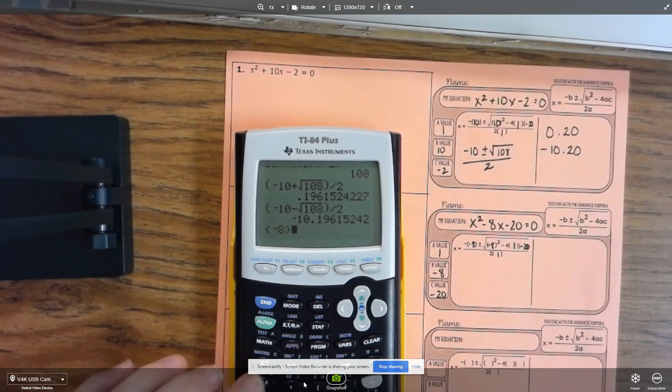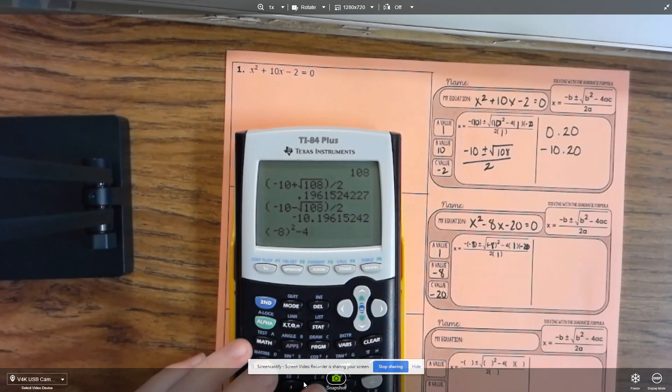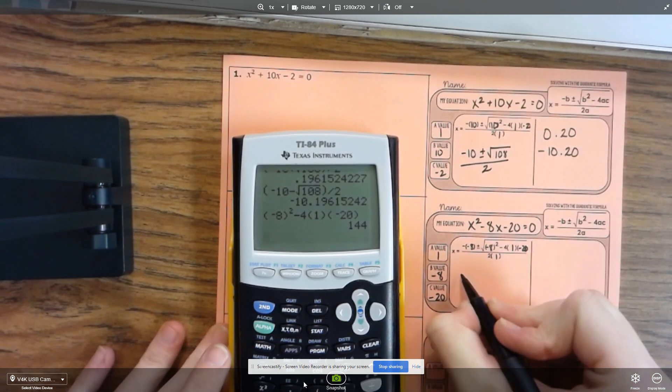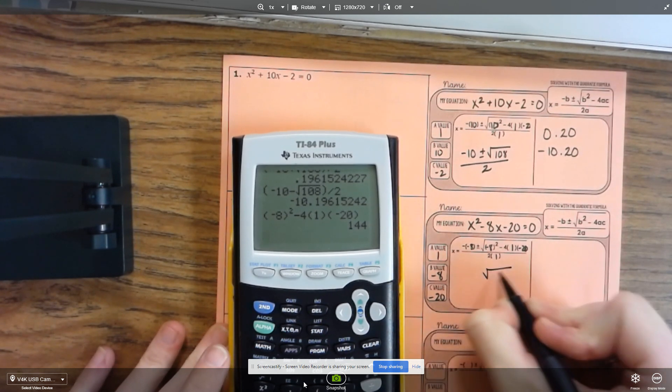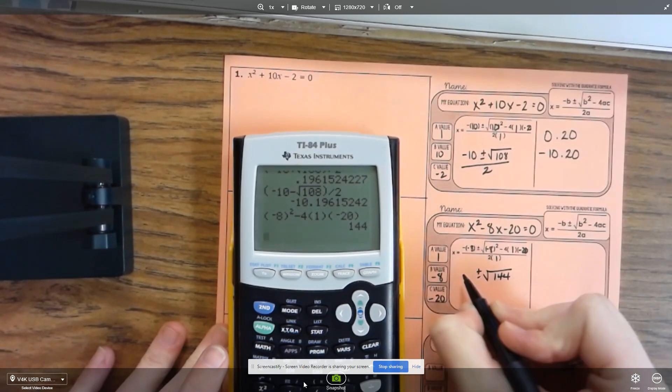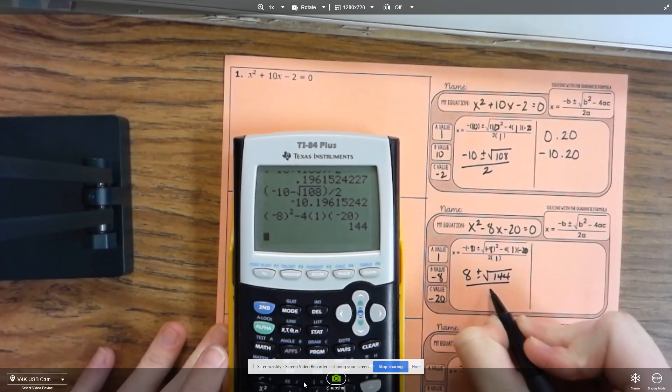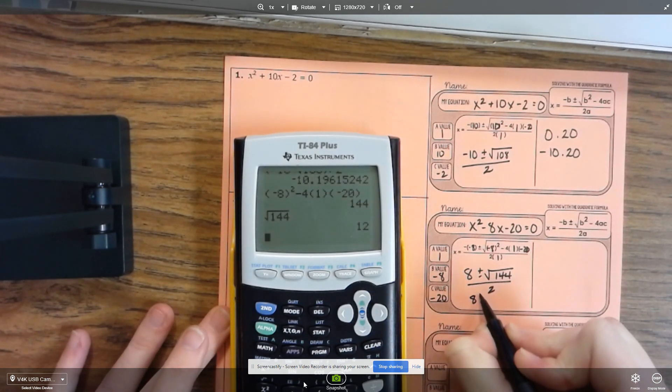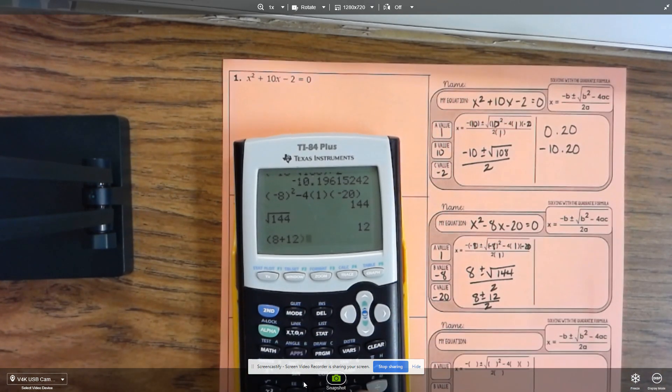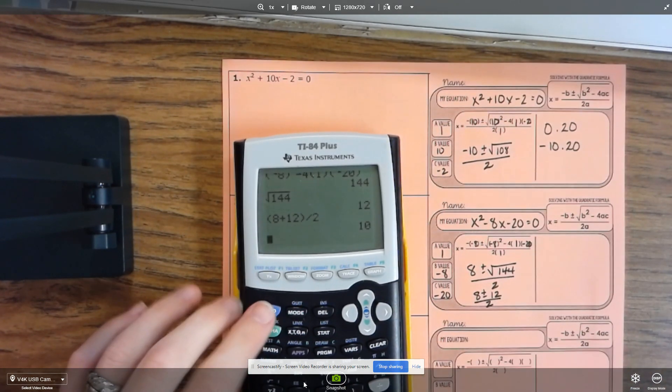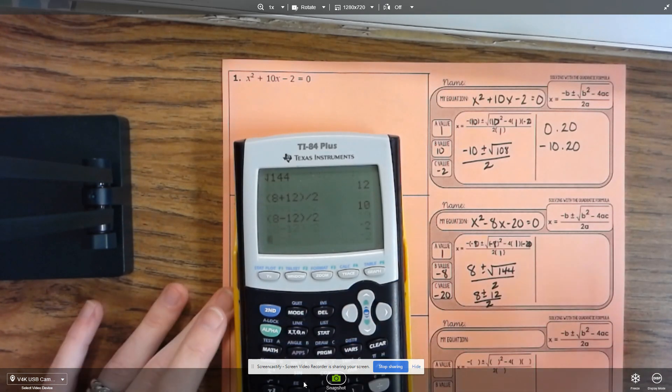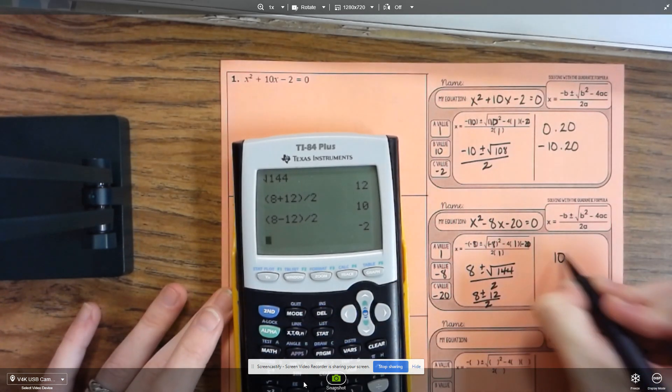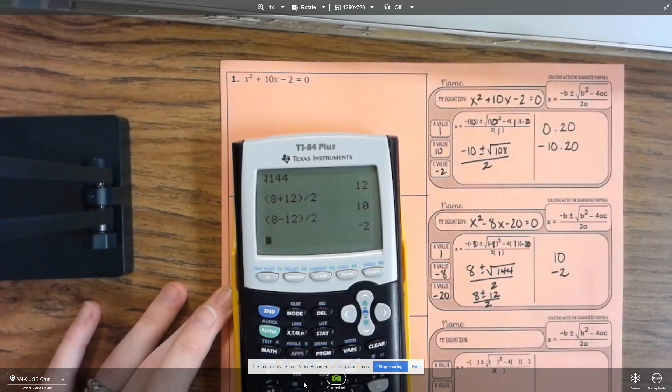So negative 8 squared minus 4 times 1 times negative 20 gives me a square root of 144. So a negative negative 8 would be a positive 8. And so the square root of 144 is 12. So now you have 8 plus or minus 12 divided by 2. So 8 plus 12 divided by 2, and then 8 minus 12 divided by 2. So you would get 10 or a negative 2.